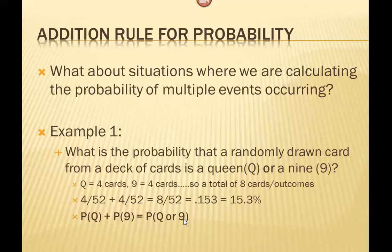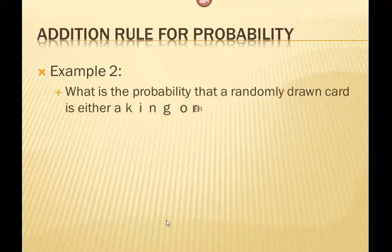If we write this out symbolically, we can see the addition rule in effect. The probability of one event plus the probability of a second event equals the probability that either this or that event occurs. Now, does this apply all the time? In general, we can say it does, but as you see in our next example, there are exceptions.